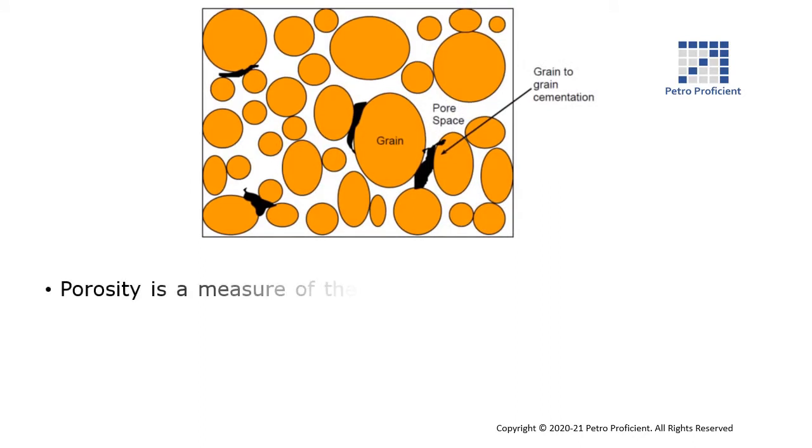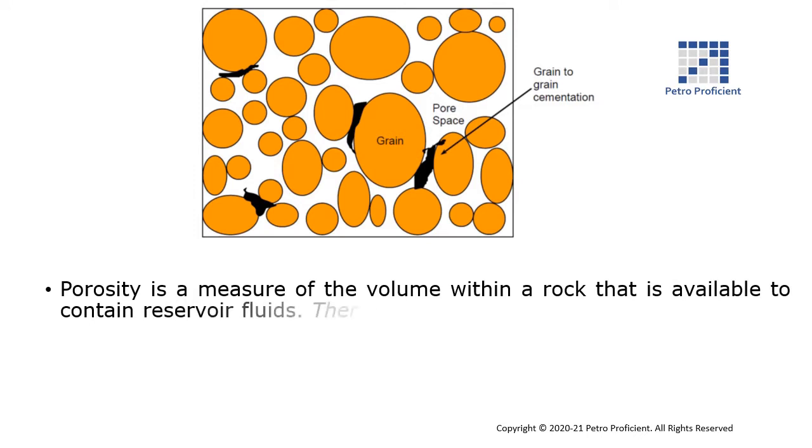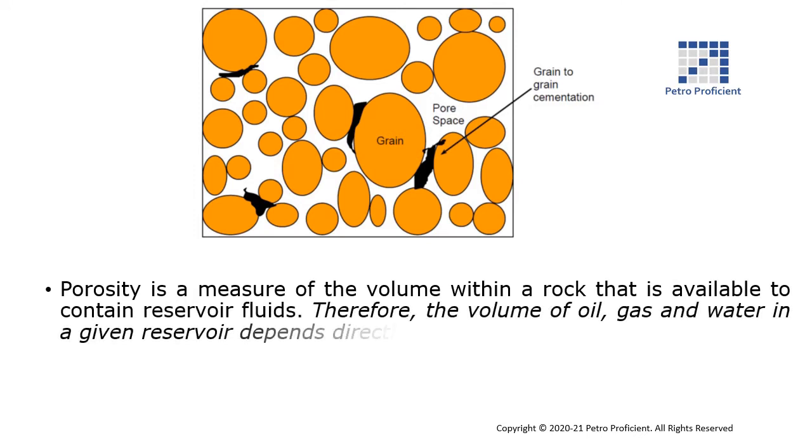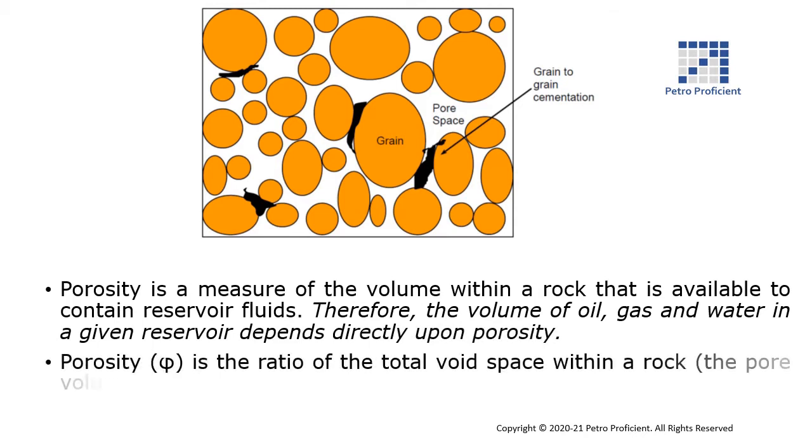Porosity is a measure of the volume within a rock that is available to contain reservoir fluids. Therefore, the volume of oil, gas, and water in a given reservoir depends directly upon porosity. Porosity, phi, is the ratio of the total void space within a rock, which is the pore volume, to the total bulk volume of that rock.